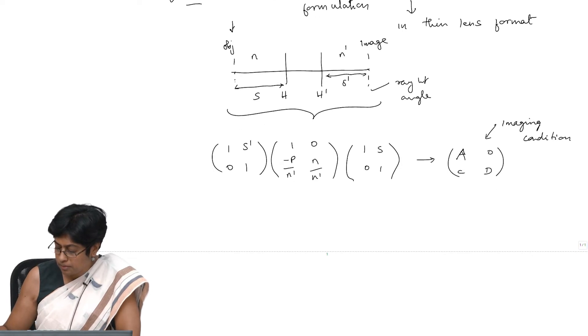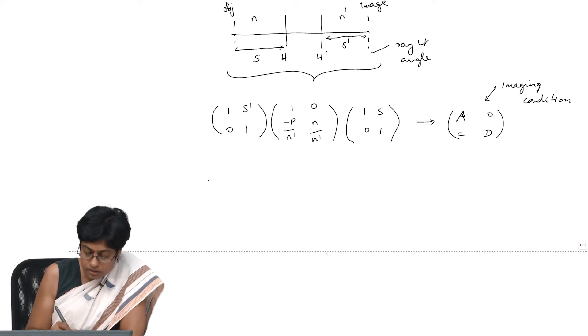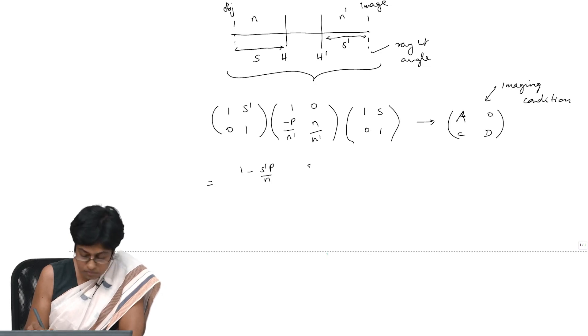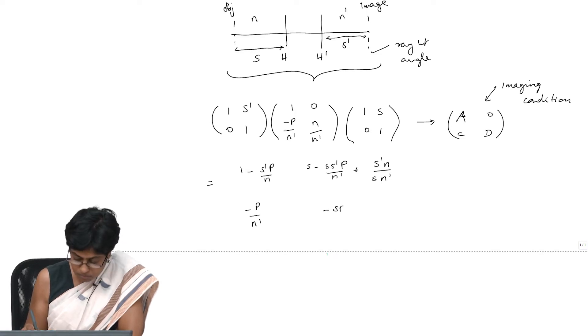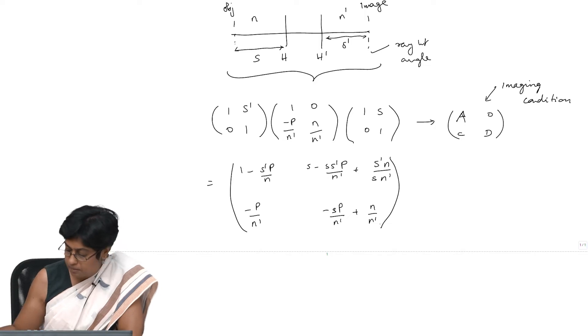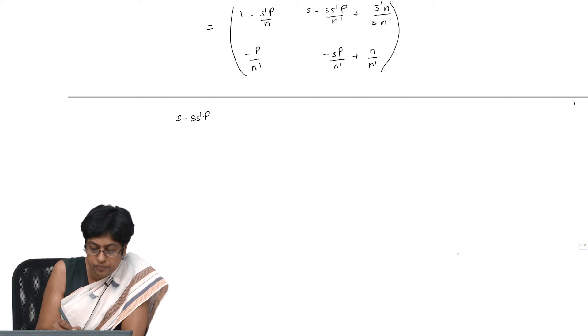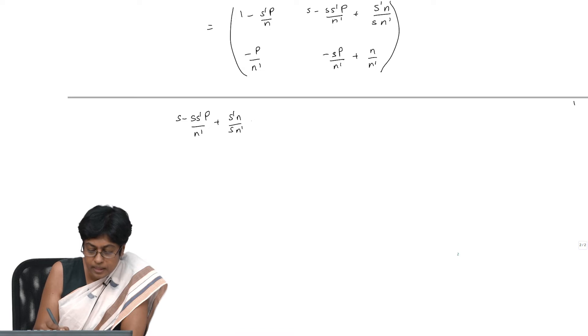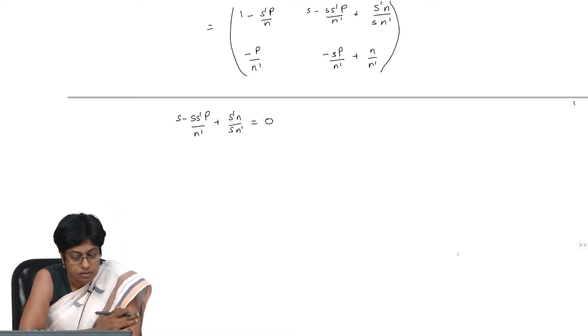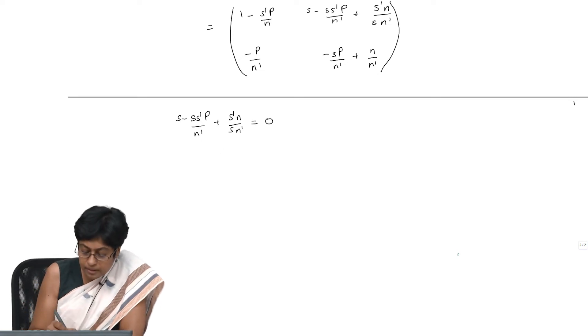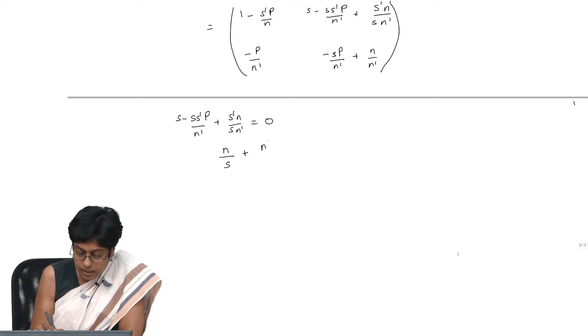If we carry out this product—and I will just do that here—I have just carried out that multiplication, a particular term, and equate it to 0. The moment I do that, this will reduce to N by S plus N dash by S dash is equal to P.